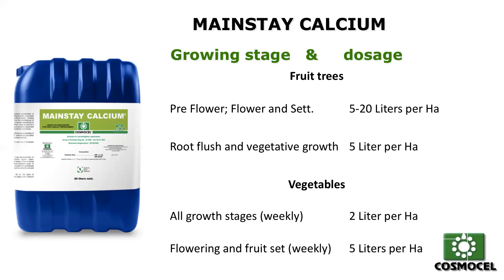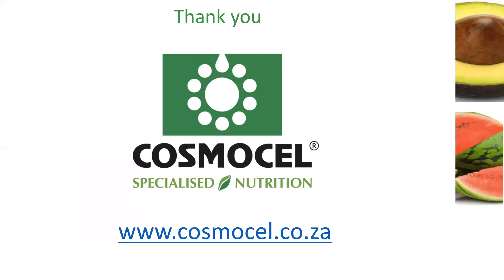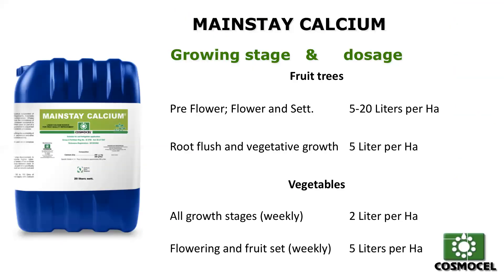On vegetables we recommend almost a weekly application of around two to five liters per hectare. It's important to apply it through your fertigation — through the irrigation system — for optimal benefit, though it can also be applied as a foliar. The product was designed to be put through the irrigation system for optimal results.